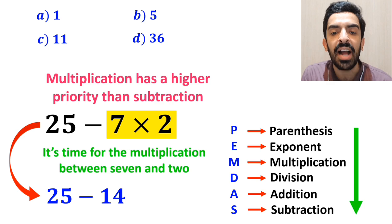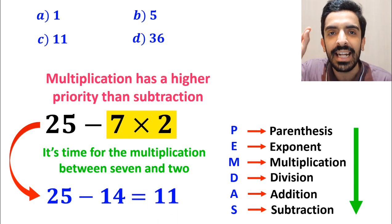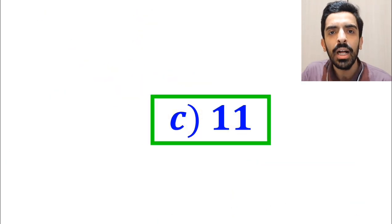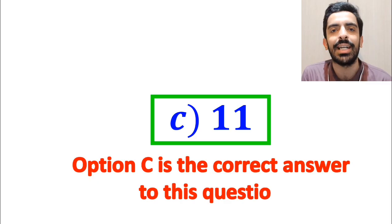So we'll write this expression as 25 minus 14, which ultimately gives us the answer 11. Therefore, option C is the correct answer to this question.